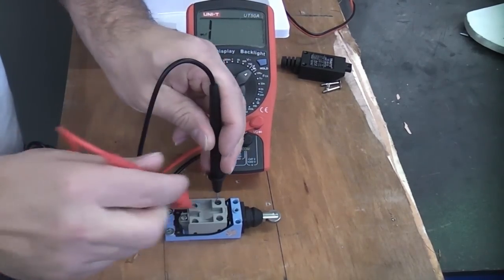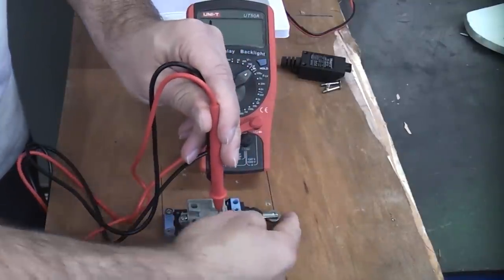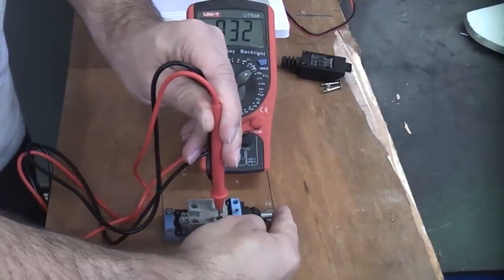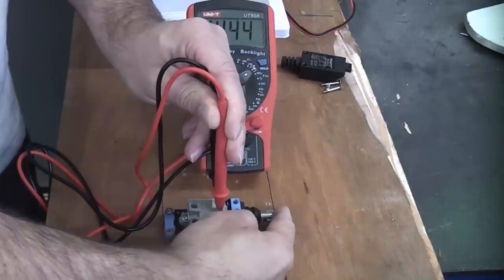So if we put those two probes on the normally open contacts you can see that nothing happens until we press in the limit switch. That completes the circuit and we get continuity.